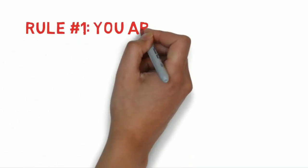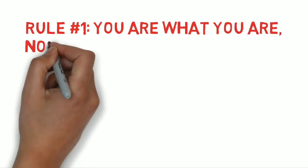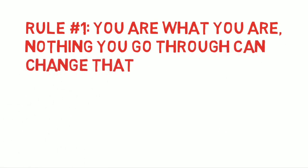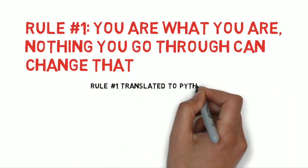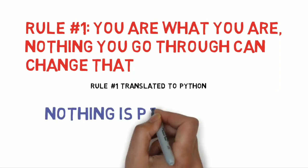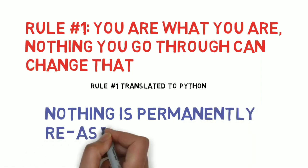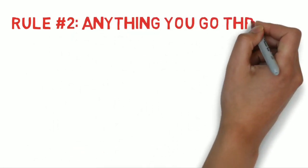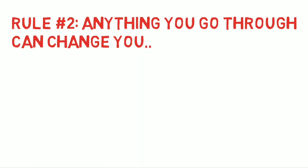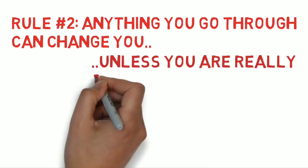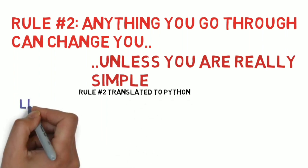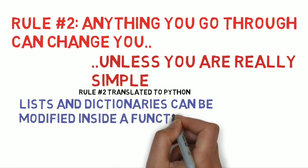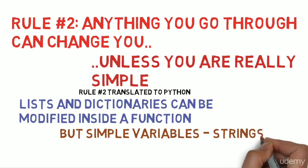Here are two simple rules to help you remember. First: you are what you are — nothing you go through can change that. In Python, this means nothing can be reassigned to a completely different object inside a function. Second: anything you go through can change you a little bit — unless you are really simple, then you can't be changed at all. In Python, this means lists and dictionaries can be modified inside a function, but simple objects like numbers and strings cannot.